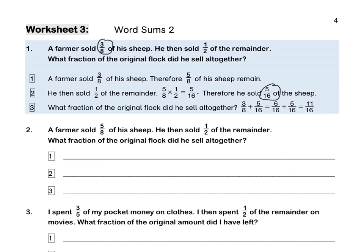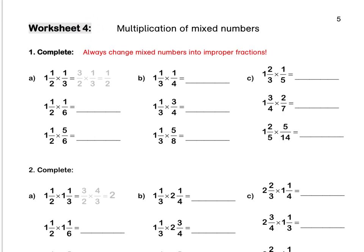Press pause to complete this entire page by yourself. Worksheet 4: Multiplication of mixed numbers. Always change mixed numbers into improper fractions before multiplying. Therefore, 1 and a half times a third: 1 and a half is 3 halves as an improper fraction, times a third. We can divide top and bottom by 3, and when we multiply out, our final answer is a half.